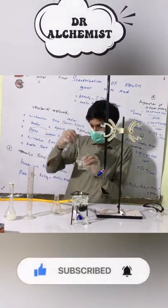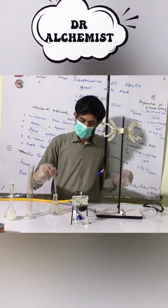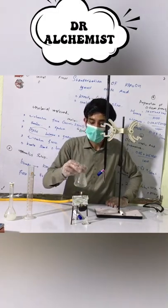After adding a few drops of concentrated sulfuric acid, you have to heat it over the Bunsen burner.